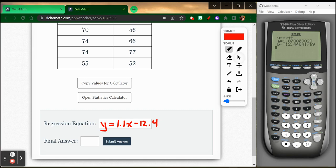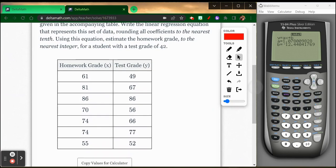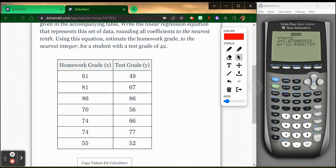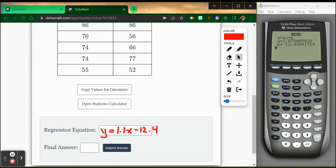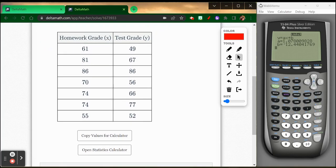Now there's a second part of this problem. It wanted us to calculate something out. So let's find out what that was. It said, using this equation, estimate the homework grade for a student with a test grade of 42. Well, again, looking at my list, if a test grade is the Y values, they want me to figure out a homework grade, which is the X values.